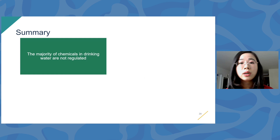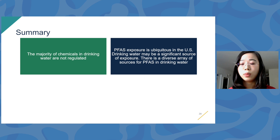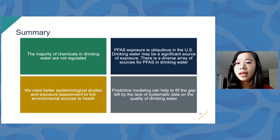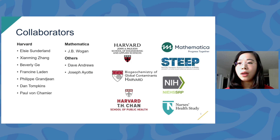In summary: the majority of chemicals in drinking water are not regulated; PFAS exposure is ubiquitous in the U.S.; drinking water may be a significant source of exposure; and there is a diverse array of sources for PFAS in drinking water. We need better epidemiological studies and exposure assessments to link environmental sources to health. And lastly, predictive models can help fill the data gap left by the lack of systematic monitoring data. I want to acknowledge my collaborators and funding sources — thank you all so much for your attention.